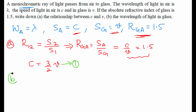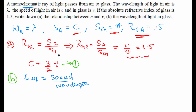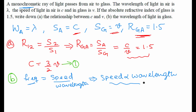Now let's go through part b: the wavelength of light in glass. Before answering this, let's understand one key point. We know that frequency equals speed divided by wavelength. Since the source is not changing, frequency will remain constant. Therefore, speed will be directly proportional to wavelength.